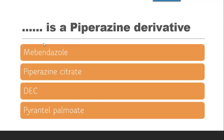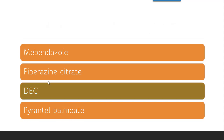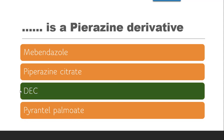Next question: Dash is a piperazine derivative. Mebendazole is a benzimidazole derivative. Piperazine citrate is piperazine itself with citrate as a salt. DEC, that is diethyl carbamazine citrate, contains the piperazine nucleus. And pyrantel pamoate. The correct answer is DEC.